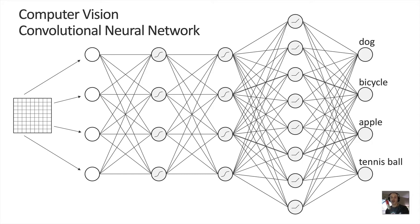On screen is a very simple neural network with only five layers. Real-world vision systems have many dozens or even hundreds of layers. This simple one is designed to take an image as input and classify it as one of exactly four objects: dog, bicycle, apple, and tennis ball. It's not capable of detecting any other kind of object except those four things it's been trained to recognize.